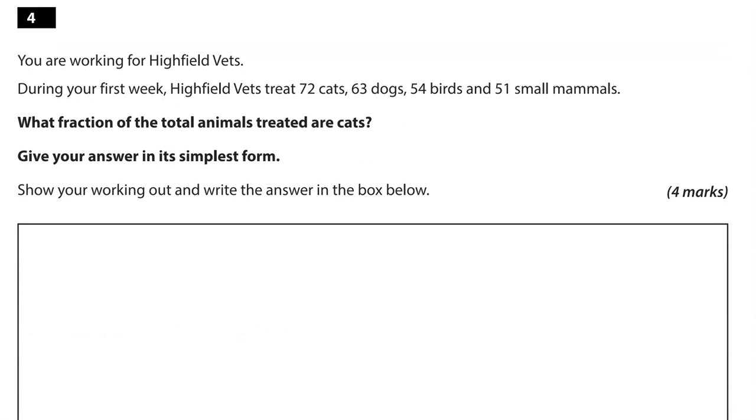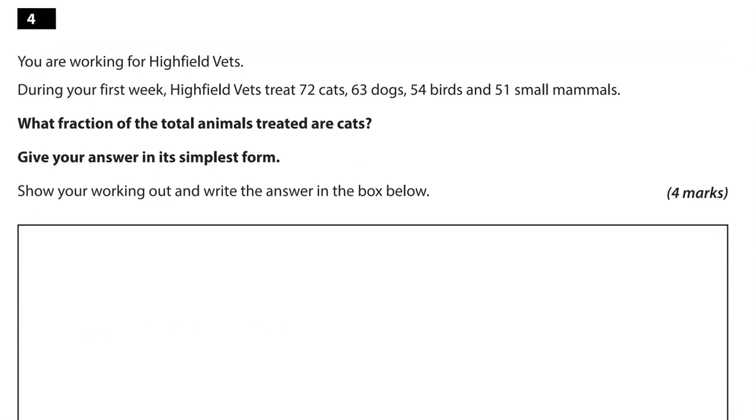Highfield vets. You're working for Highfield vets. During your first week, Highfield vets treat 72 cats, 63 dogs, 54 birds and 51 small mammals. What fraction of the total animals treated are cats? Give your answer in its simplest form. So the question is, what fraction of the total animals treated are cats? So we're focusing on the cats. That is 72 of them out of the total, which is 72 add 63 add 54 add 51.